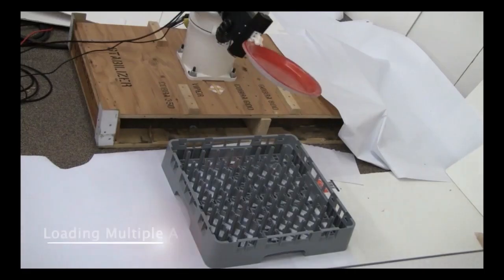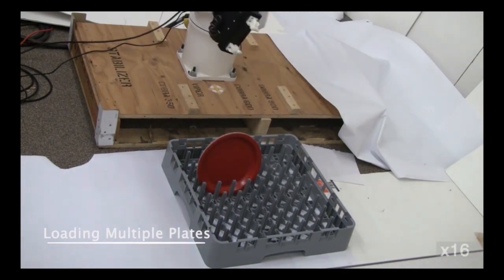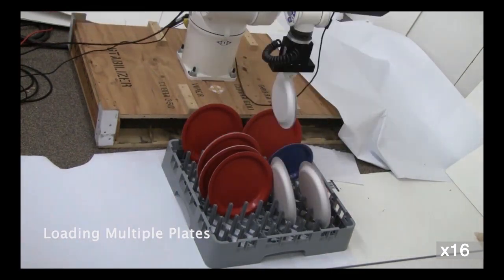We performed another task of loading two dish racks. In the first case, the robot loaded up to 16 plates onto one dish rack. All of them were placed vertically, and none of them collided with each other.